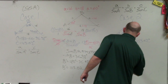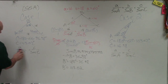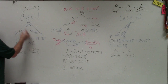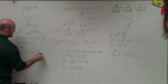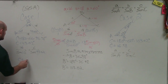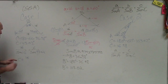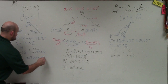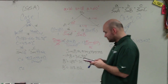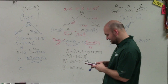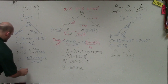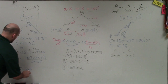For case one: a over sine of A equals c over sine of C. I know a is 16 and angle A is 60 degrees. I don't know side c, but I know angle C is 43.02 degrees. Solving for c by multiplying by sine of 43.02 on both sides, I get c equals 16 times sine of 43.02 divided by sine of 60 degrees. Plugging into the calculator: 16 times sine of 43.02 divided by sine of 60 gives me 12.6.